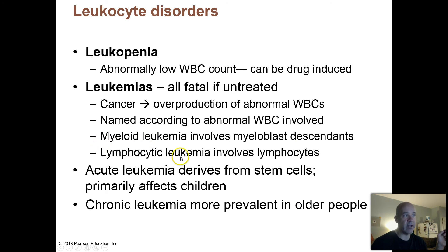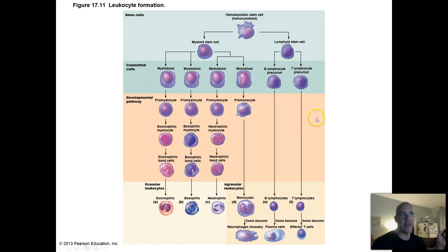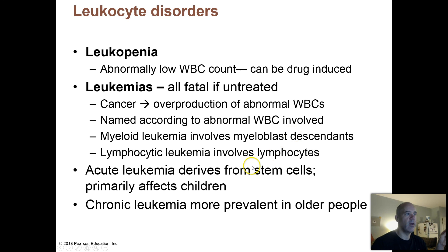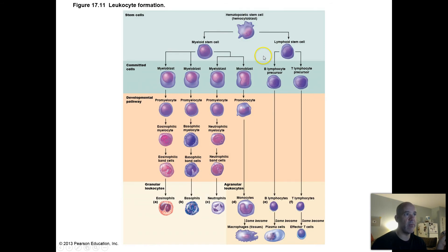A lymphocytic leukemia involves cell types in the bone marrow starting to divide out of control and becoming cancerous. Leukemias can also be classified as acute or chronic. Acute leukemias primarily affect children, but not always — they derive from earlier stem cells higher up the pathway that start dividing out of control.